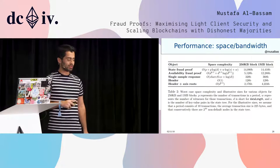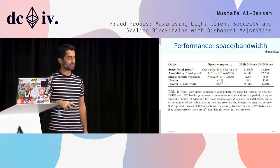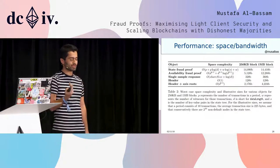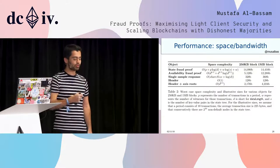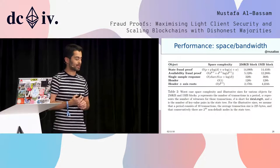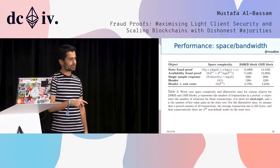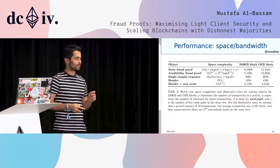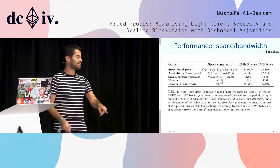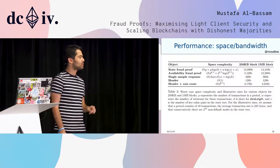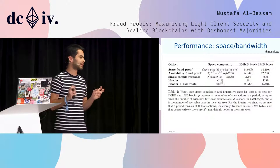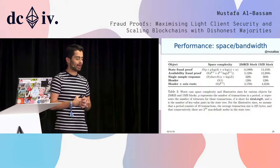We have some performance measurements. Under these parameters, assuming an intermediate state root after every 10 transactions, the size of the state fraud proof would be about 14 kilobytes. Everything is less than a few kilobytes, basically. The biggest trade-off is that if you're a light client that wants a guarantee that the data is available, you also have to download something called the axis roots — basically every single row and column in the square has its own Merkle root that you have to download. That does increase the header by about 10x, but you only have to do this if you want the data availability guarantees. You can still run super light clients with no data availability guarantees.